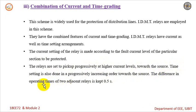The difference in the operating times of two adjacent relays is kept around 0.5 seconds. The type of relay used depends on the system characteristics: if the source impedance is smaller than the load impedance, inverse time current characteristic overcurrent relays can be used; if the source impedance is larger than the load impedance, definite time characteristic overcurrent relays are used. An IDMT relay is a compromise — at lower values of fault current its characteristic is inverse time, and at higher values of fault current it gives a definite time characteristic.